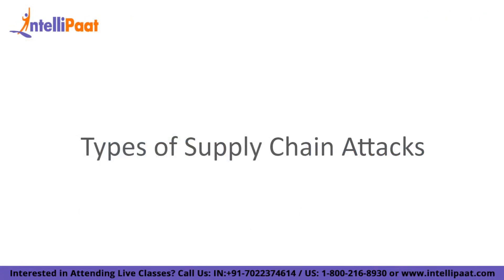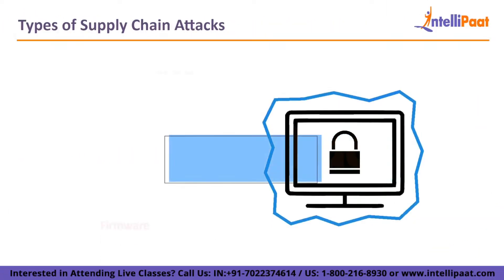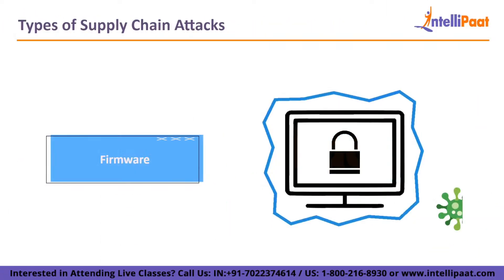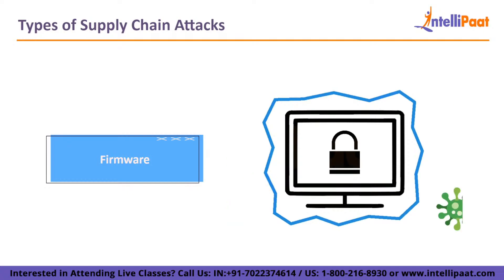Types of Supply Chain Attacks. Firmware: An attack that introduces malware into a computer's booting code can be launched instantly. The malware starts running as soon as a computer starts up, endangering the entire system. Attacks on firmware are swift, frequently unnoticed if you are not looking for them, and very destructive.